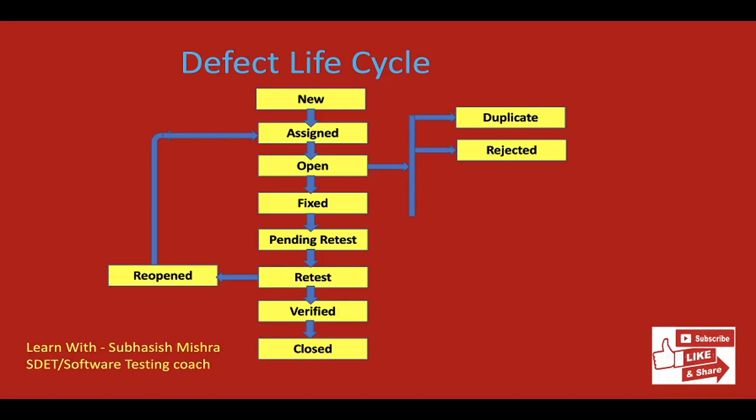Then there is Rejected. If the developer feels the bug is not genuine, he can reject it. Maybe the QA made a mistake and wrongly raised the issue — but actually it is not an issue. Then the developer can reject the bug. If you think it is still a correct bug, you can provide screenshots or videos, or talk directly to the developer to understand why they are rejecting it.